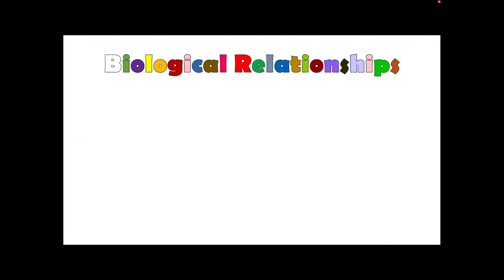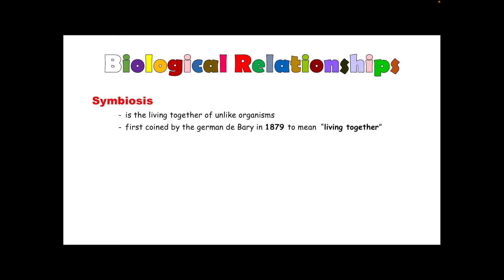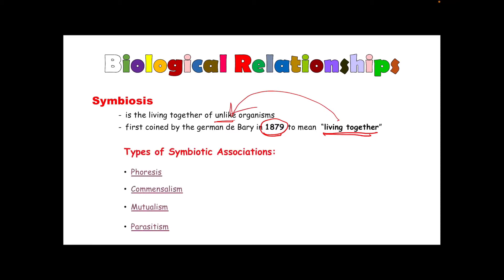Now let us talk about biological relationships. The term symbiosis is very common to us, and that means the living together of unlike organisms. This was first coined by De Bary in 1879 to mean living together of unlike organisms. There are four general types of symbiotic associations: phoresis, commensalism, mutualism, and parasitism.